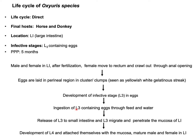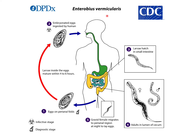The final host is infected by ingesting L3-containing eggs with contaminated food and water. After ingestion, the L3-containing eggs hatch in the small intestine. The L3 then penetrates the intestinal mucosa, followed by development of L4, which attaches to the mucosa. Finally, in the lumen of the large intestine, male and female adult parasites develop, and the female again moves to the anal opening to lay eggs in clusters in the perineal region.